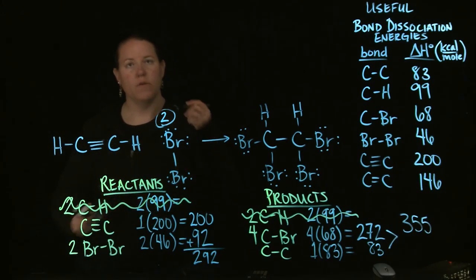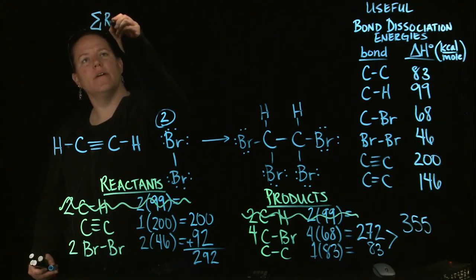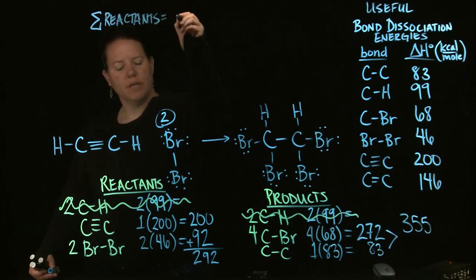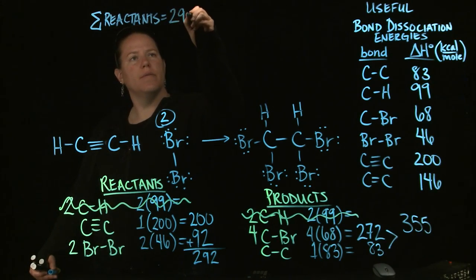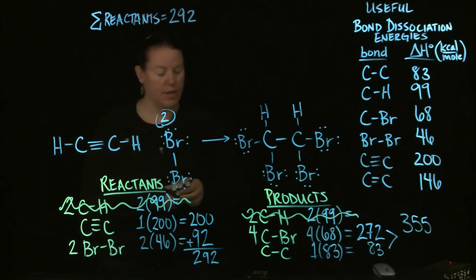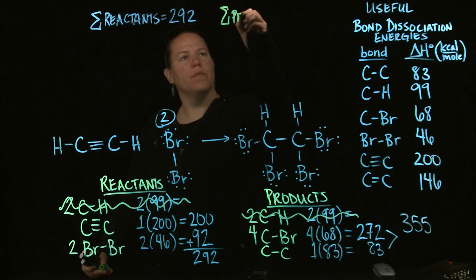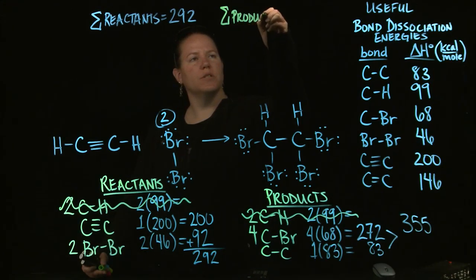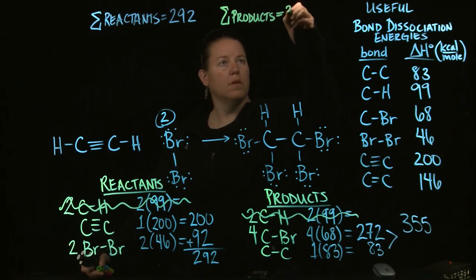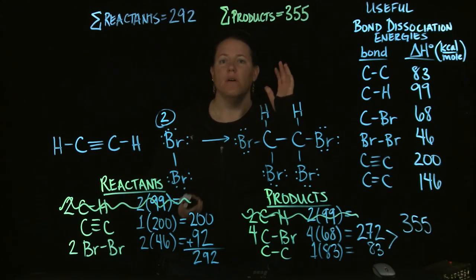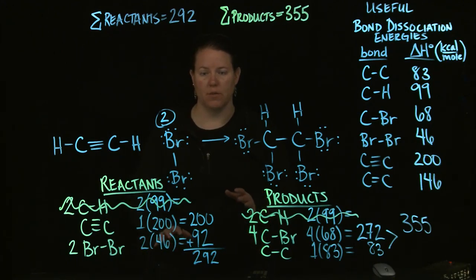We have now the sum of the reactants and the sum of the products. And that is fantastic. That's exactly the same kind of process that we had for standard molar enthalpy formation. It's the exact same kind of idea. The big difference here is what we do with those sums. Okay. So, now I have the sum of the reactants, which is equal to 292 kilocalories per mole, sorry. And the sum of the products here, and that's 355.